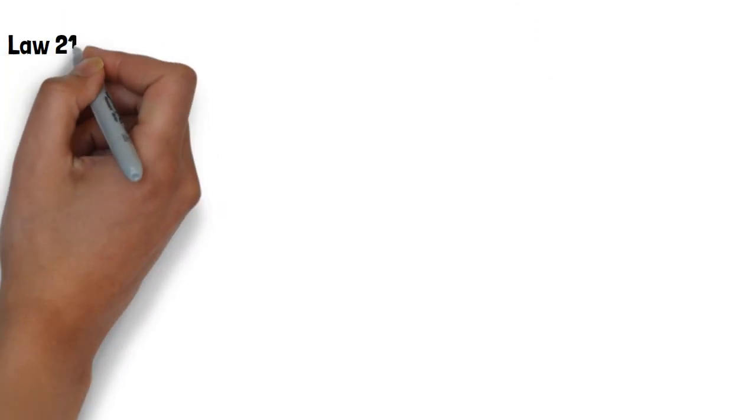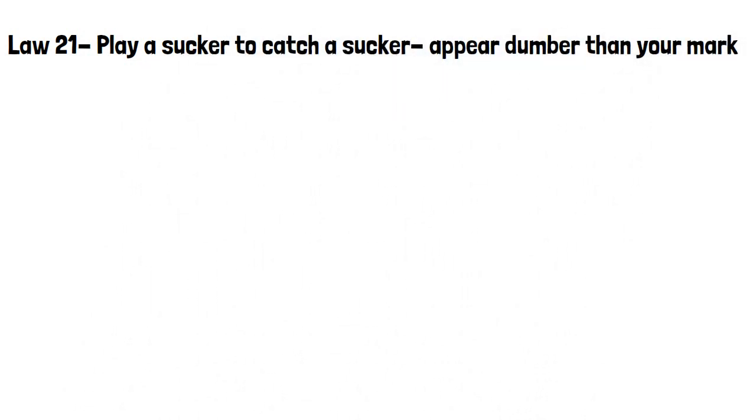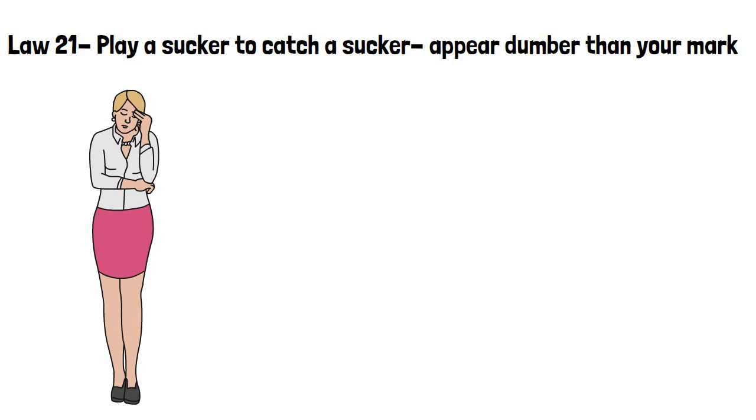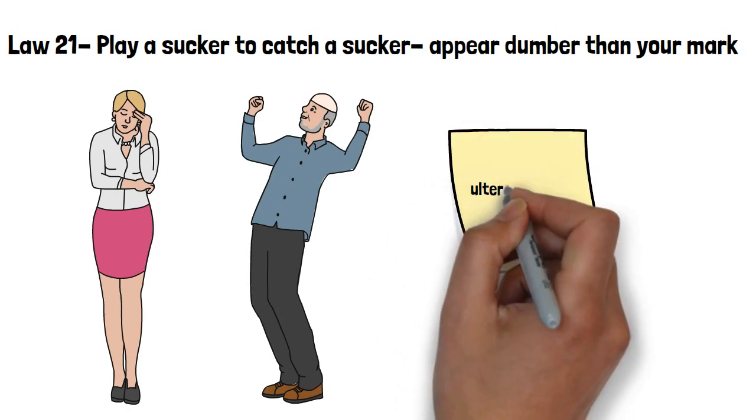Law 21, play a sucker to catch a sucker. Appear dumber than your mark. No one likes to feel stupid, so this is a great trick to make your enemies feel smarter than you. Once they believe themselves to be more intelligent, they'll never suspect that you have any ulterior motives.